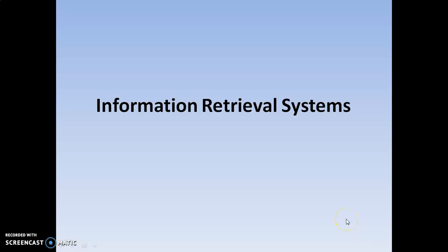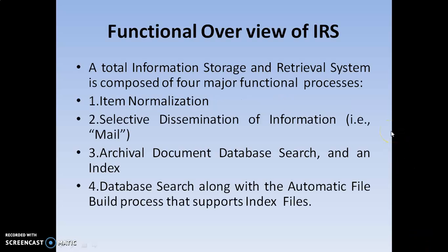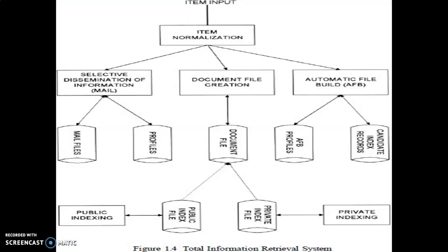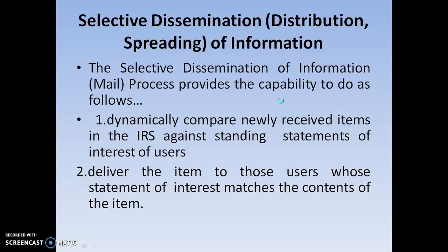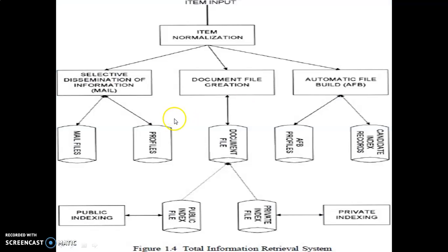Let us see what important concepts I am going to describe in this particular video. As described in the previous videos, we have already seen the functional overview of the information retrieval systems. Whenever an item is given as input, that item gets normalized. This feature is called item normalization, and it is divided into three different types: selective dissemination of information, document file creation, and automatic file build.